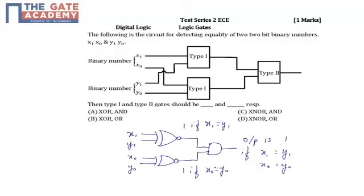Hello students, the following question is from test series 2, subject digital logic, chapter logic gates, and the question is asked for one mark. The question is: the following circuit is used for detecting equality of 2-bit binary numbers.